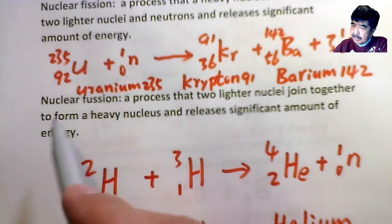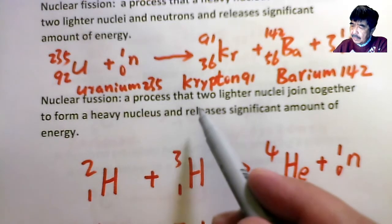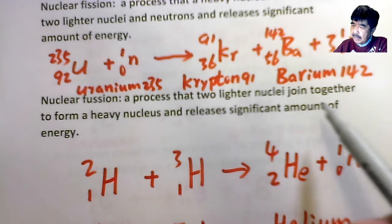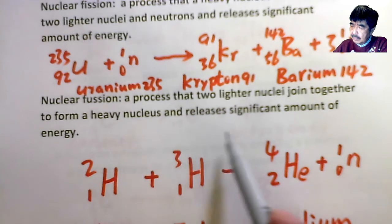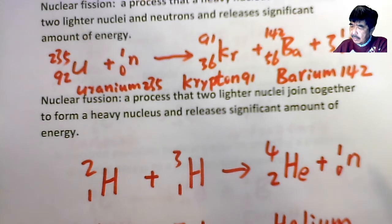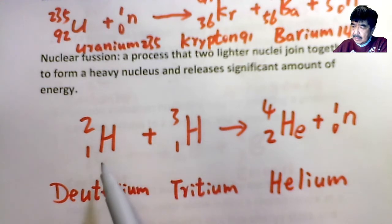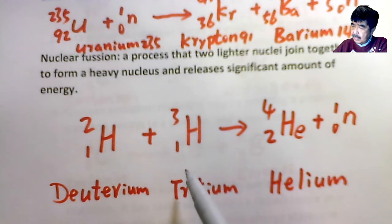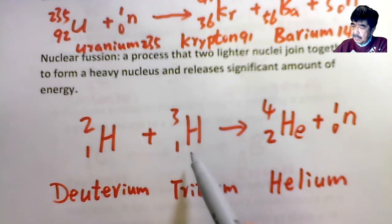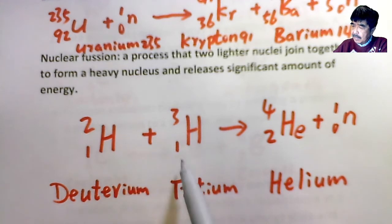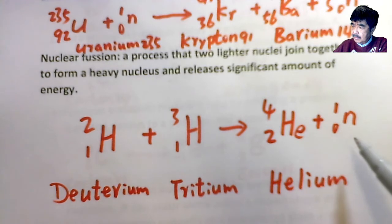The last one is called nuclear fusion. It's a process where two lighter nuclei join together to form a heavy nucleus and release a lot of energy. The example is deuterium and tritium — both isotopes of hydrogen — combining to form helium and a neutron. That's the example of nuclear fusion.